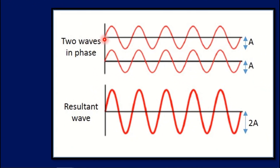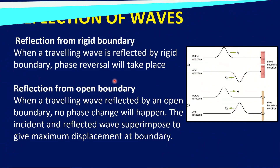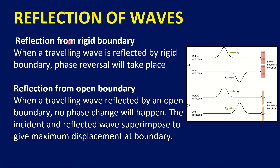In this case, we will consider two waves. The first wave has displacement y1 and the second wave has displacement y2. The net displacement is y1 plus y2. Next is the reflection of waves — reflection from a rigid boundary.